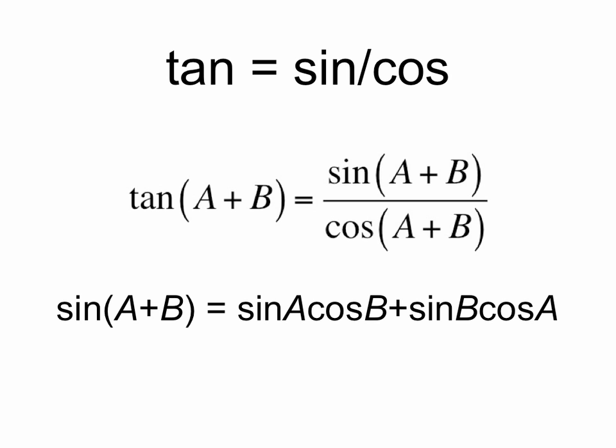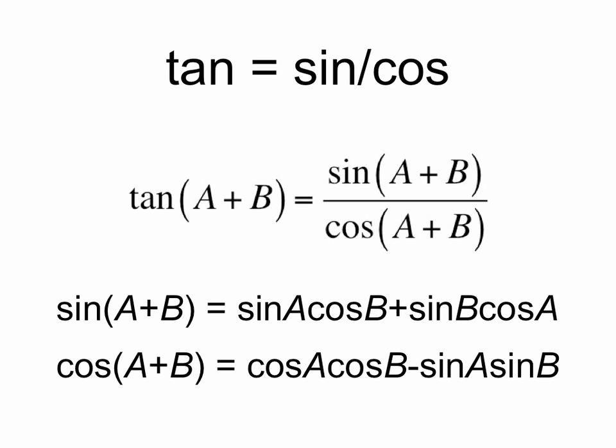We can use the trigonometric identity for sine of a plus b, which is equal to sine a cosine b plus sine b cosine a. We can also use an identity for cosine a plus b, which is equal to cosine a cosine b minus sine a sine b.